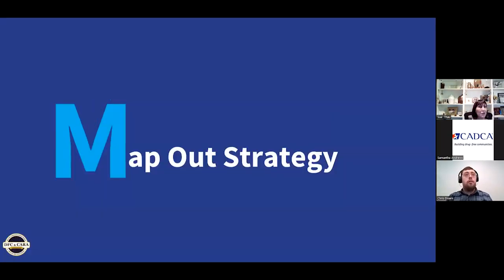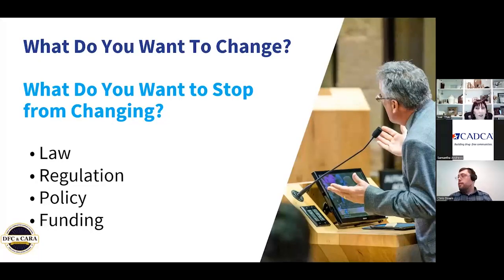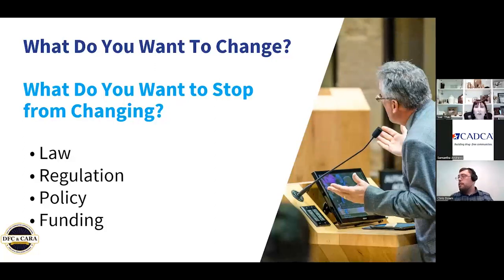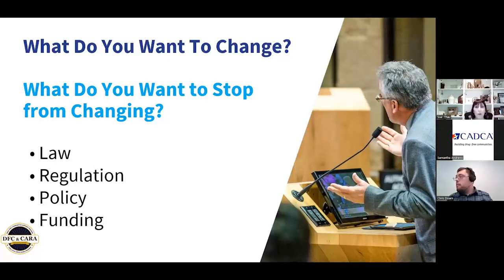The first thing you have to do is really map out your advocacy strategy from A to Z. You have to figure out what it is you want to change, or in some cases, what do you want to stop from changing? That applies to things like changing drug policy to legalize drugs and other things. For the most part, I'm going to focus on what you want to change. So what do you want to change? Is it a law? Is it a regulation? Is it a policy? Is it a funding issue?